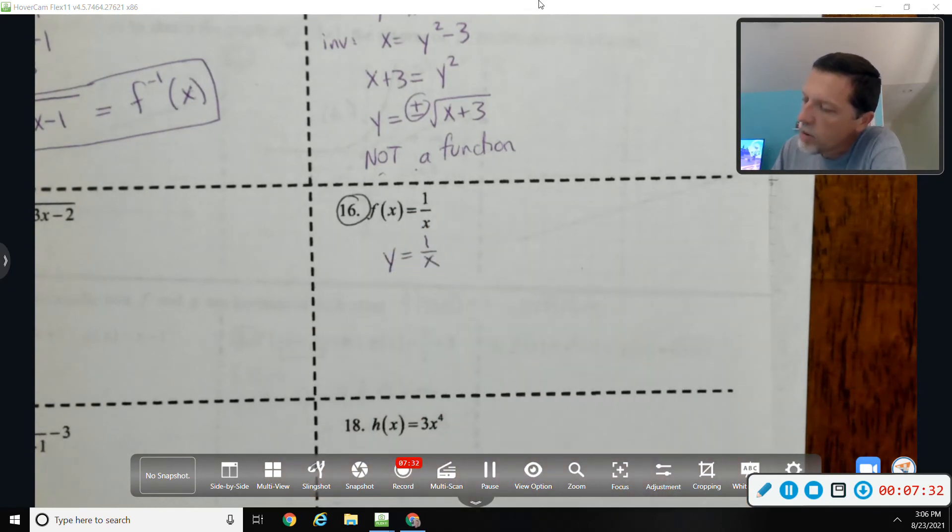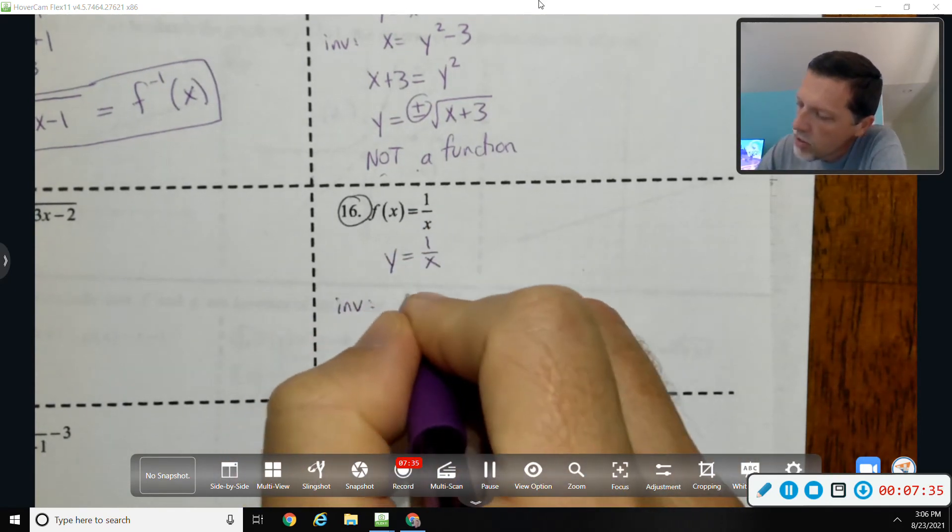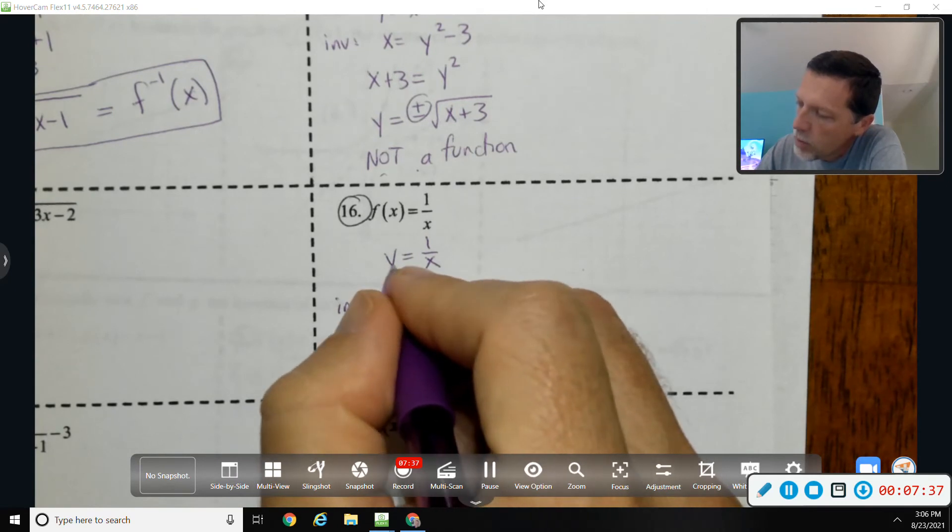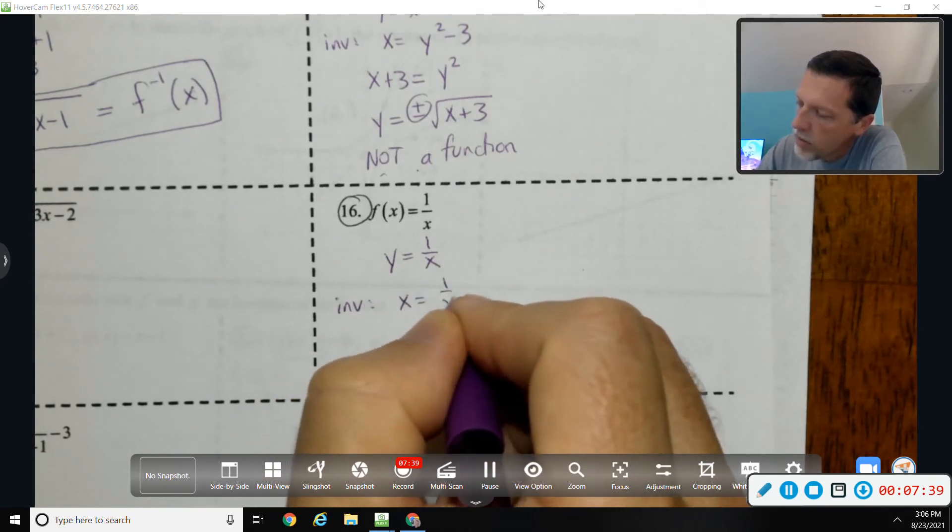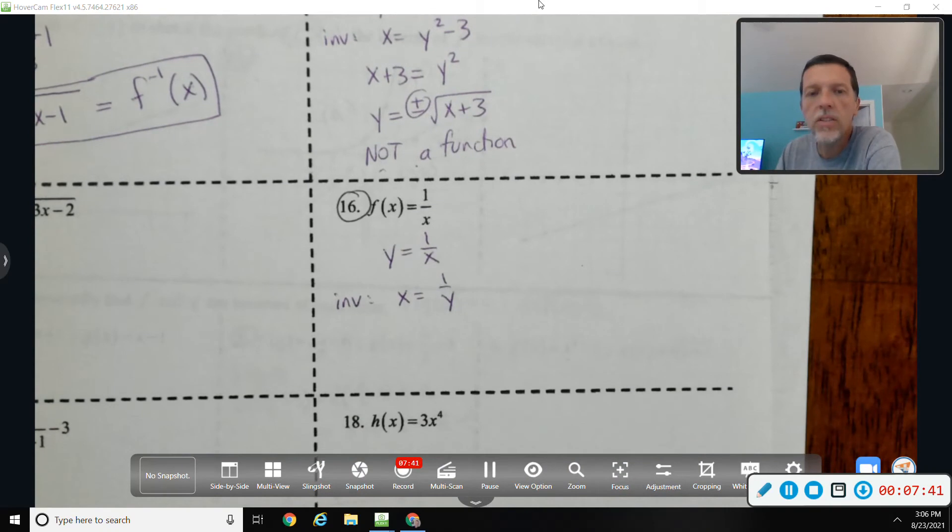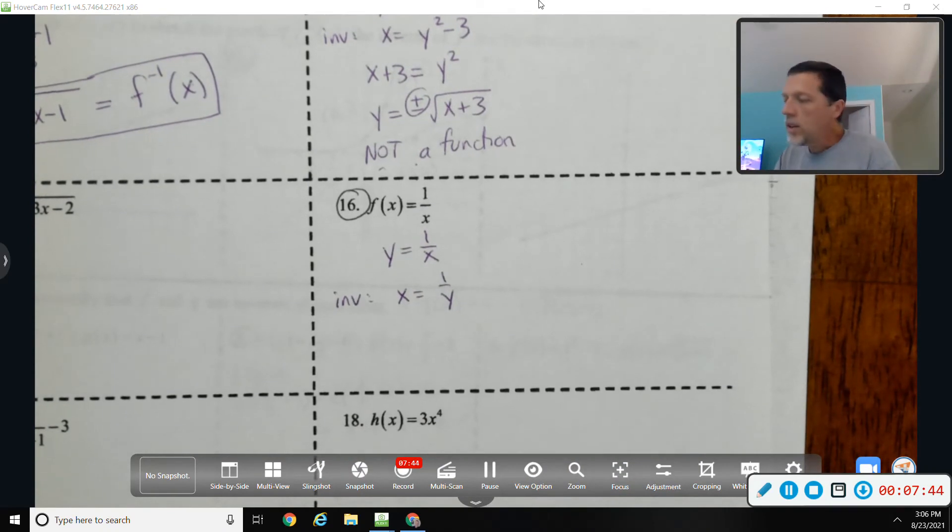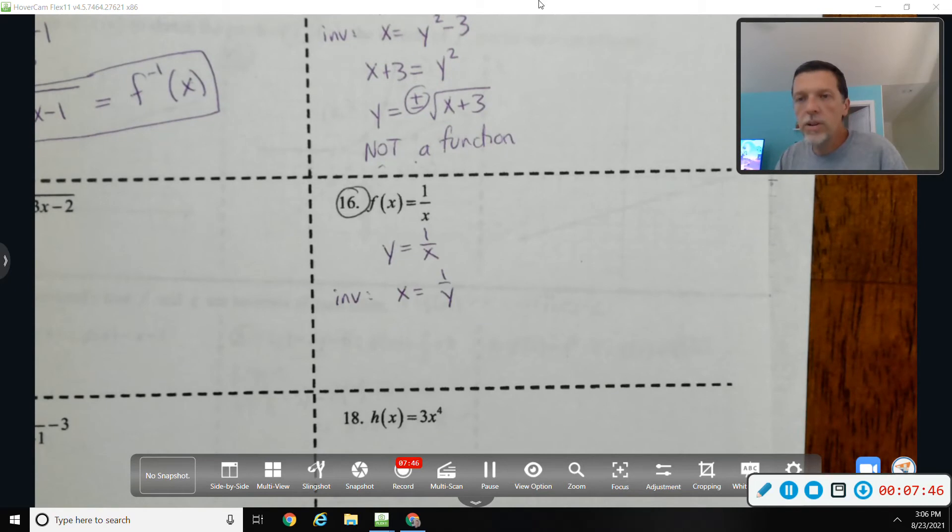Pick 16 because something kind of strange happens on 16. Y equals 1 over x. To get the inverse, we put x in for y and y in for x, and then we need to solve that for y.